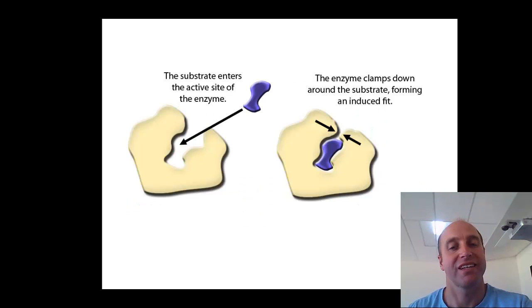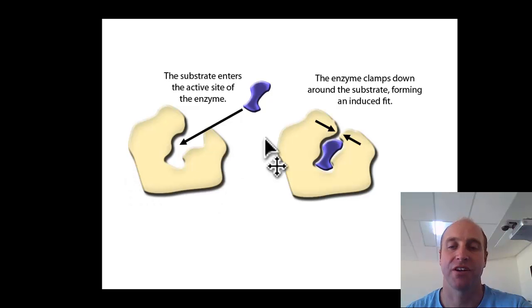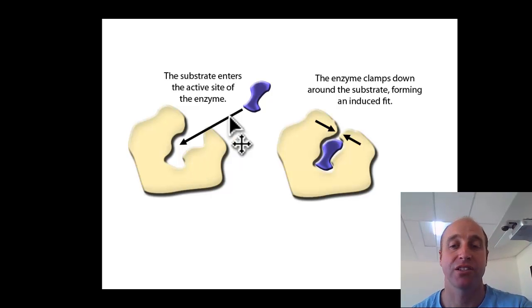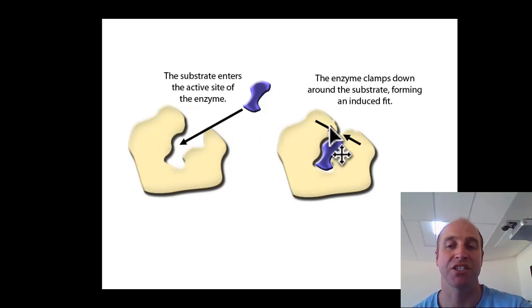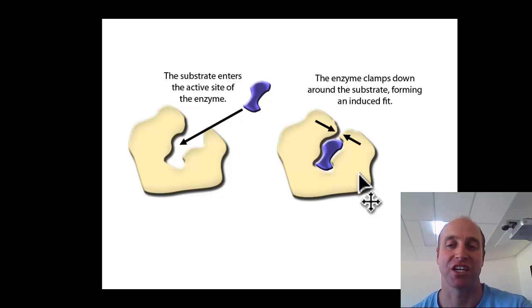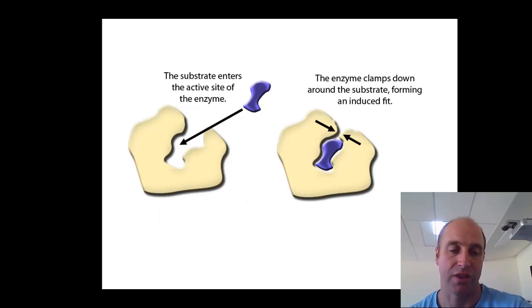The only real extension that we have with the induced fit model is that the shape of the enzyme changes when the substrate is in the active site, allowing the enzyme to fold it and either break it apart or mould it. It still works on a lock and key fit in that there is shape specificity, but that fit makes the bonds happen or pulls the bonds apart when the enzyme actually changes its shape a little bit. That's just a little bit of extra knowledge as we've learnt more about the molecules involved with enzymes.